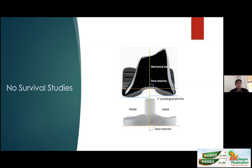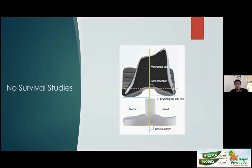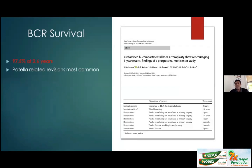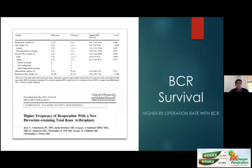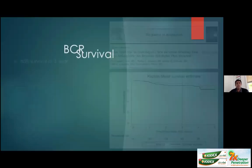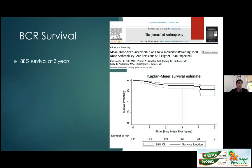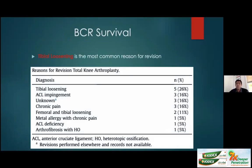For bicruciate retaining survival: short-term results show approximately 98% at two to three years, but patella revisions are the most common complication as the extensor mechanism is stressed if the ACL doesn't function properly. Higher re-operation rates exist with bicruciate retaining designs due to technical challenges in preserving both cruciate ligaments. Some studies show humbling results — 88% survival, meaning a 12% failure rate at three years — a high failure rate for a newer design. Tibial loosening is the most common revision indication.